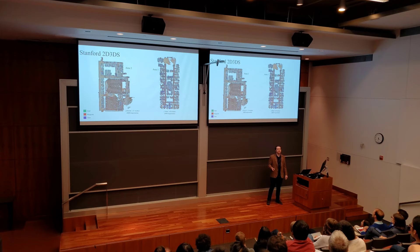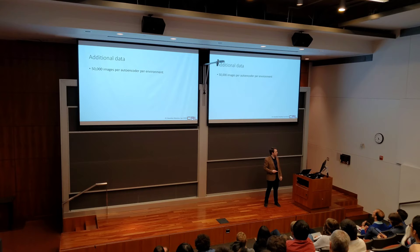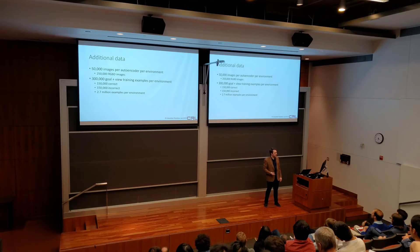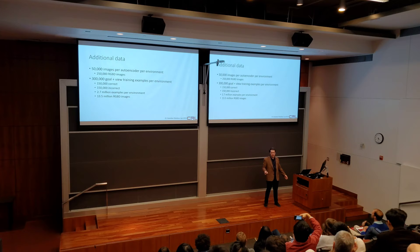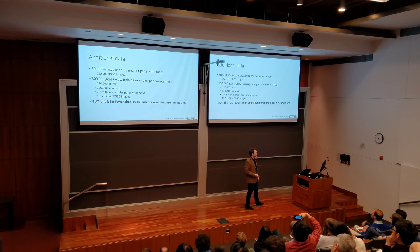We also use two environments in the Stanford 2D-3DS dataset, which are extremely large — probably about as big or even bigger than this building — and we train the robot to move through the entire environment. We collected 50,000 images per environment to train an autoencoder, so an additional 250,000 images total. We had 300,000 training examples for a goal checker. The 50-50 split comes out to about 2.7 million images, and overall we had 13.5 million images for the goal checker. The next best alternative required 10 million per room, so yes it's a lot, but it's way less. It did mean I got a free sauna in my office for about three weeks generating all of this data.